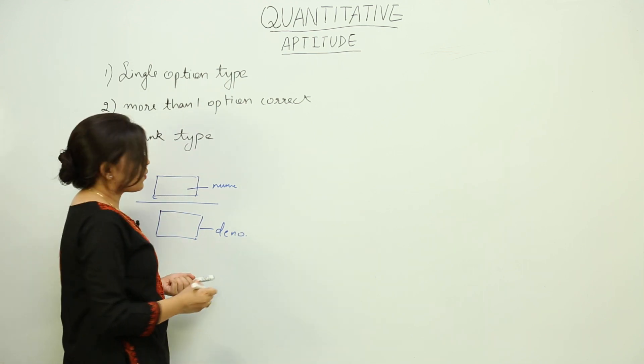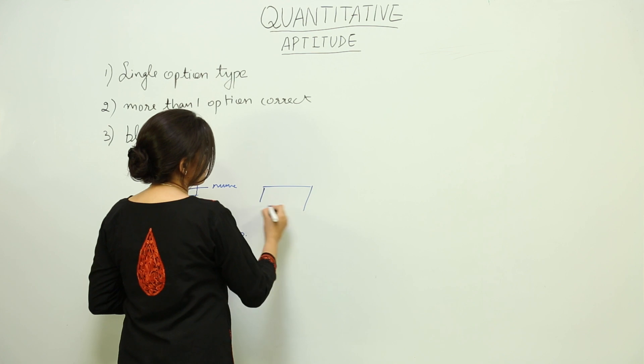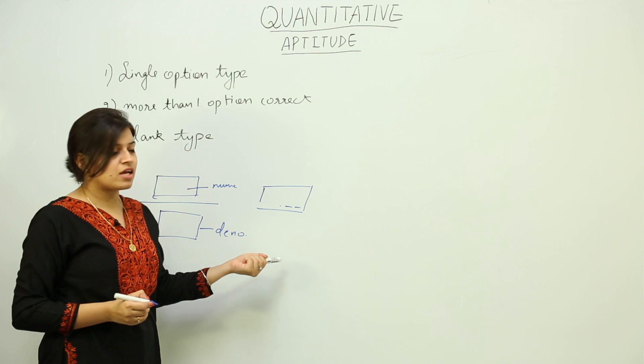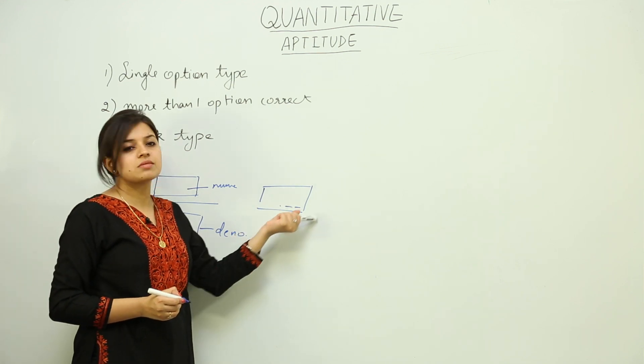And if it is a decimal type question, then you have to answer up to two decimal points. That means two places after the decimal have to be answered. You have to round up to the two decimal places.